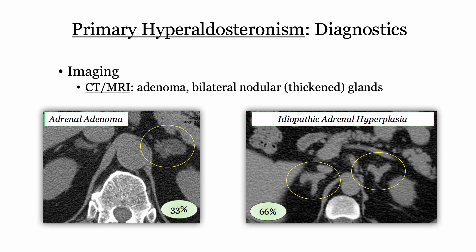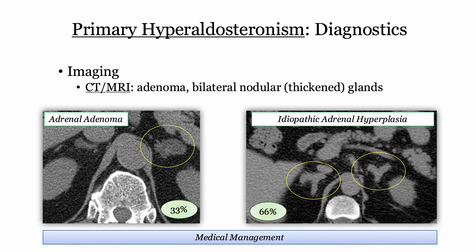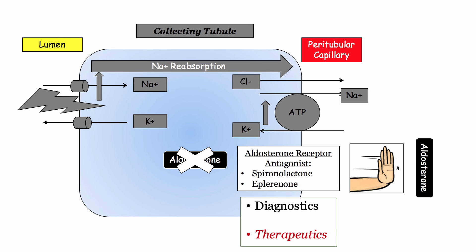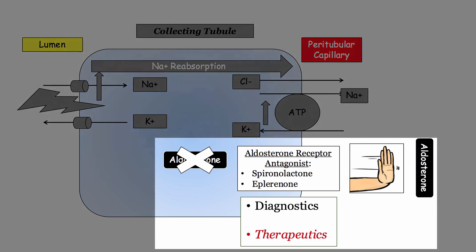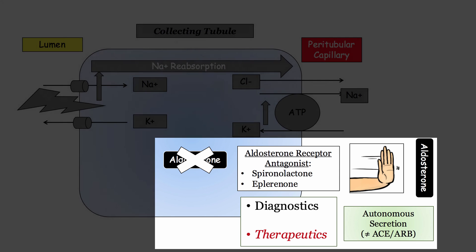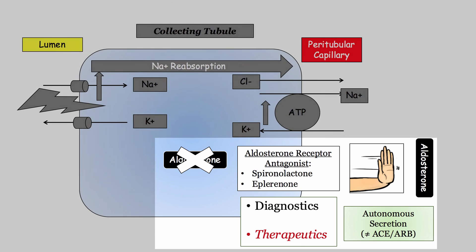In idiopathic adrenal hyperplasia, the adrenal gland behaves like it has lots of tiny adenomas. On the boards, the distinction is largely irrelevant. The only implication relates to therapeutics — both entities will be treated with medications, but only the adenoma may be surgically excised if refractory to medical therapy. For medical therapeutics, aldosterone receptor antagonists are used for a hyperaldosterone state. Be familiar with both spironolactone and eplerenone as treatment alternatives. Since aldosterone production is autonomous and not related to angiotensin 2, ACE inhibitors or ARBs do not have a primary role.